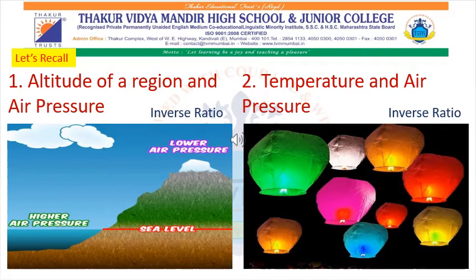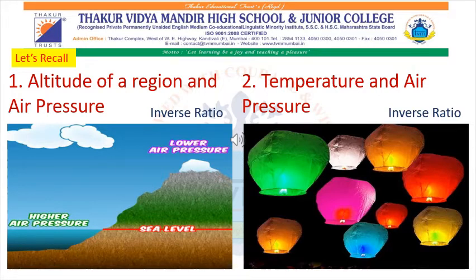There is an inverse ratio between altitude of the region and air pressure — as one moves higher and higher from the surface of the earth, the air becomes thinner and thinner; as a result, air pressure decreases with increasing altitude and vice versa. Again, there is an inverse ratio between air temperature and air pressure. Whenever the temperature is high, the air pressure is low. As temperature rises, the air gets heated, expands, and becomes lighter. This lighter air near the earth's surface starts moving up towards the sky, and as a result the air pressure in such areas decreases.